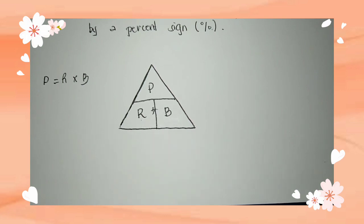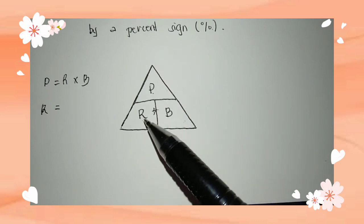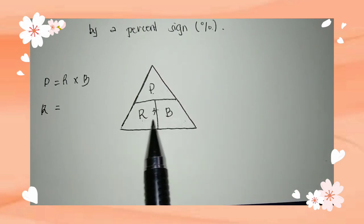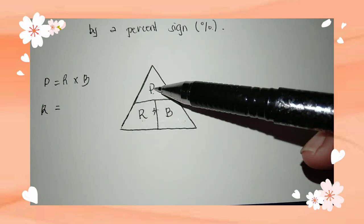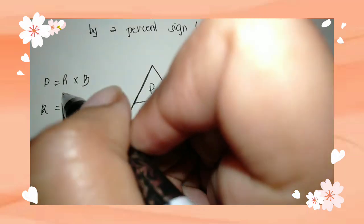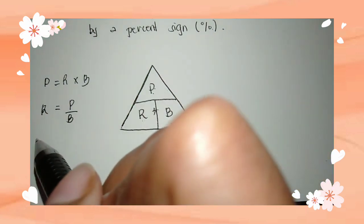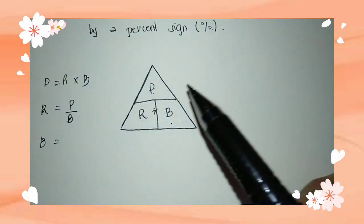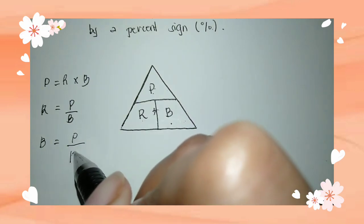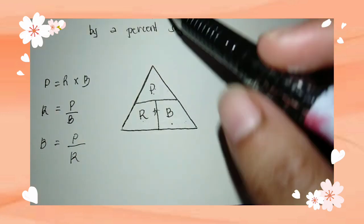Now, what if we're finding the rate? We derive the formula again. We have R, and since P and B remain — when two values are side by side we multiply, but when P is on top and B is on the bottom, it is division. So the formula for rate is P over B. Similarly, for base: since P is on top, the formula is B equal to P over R.